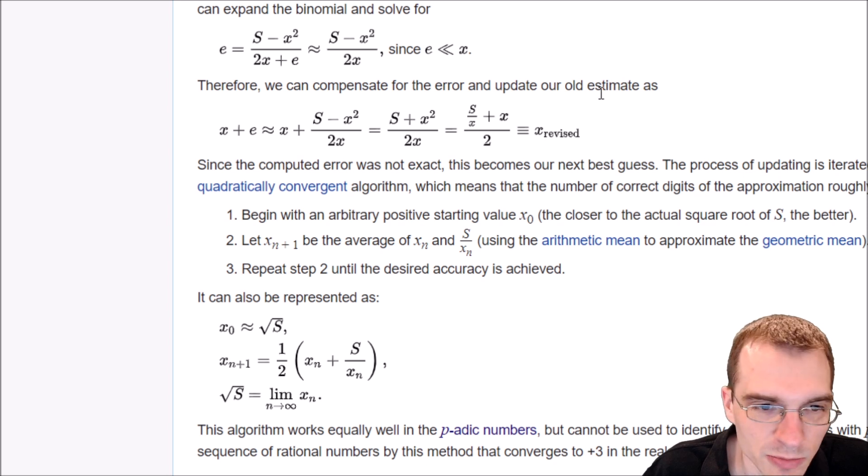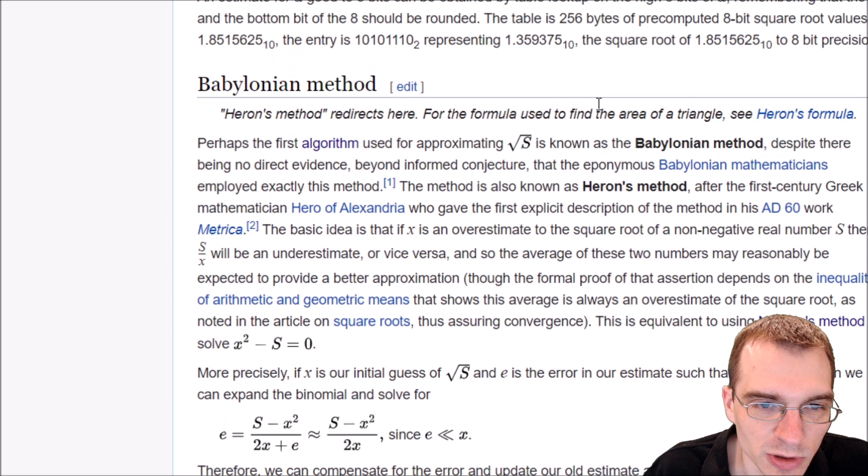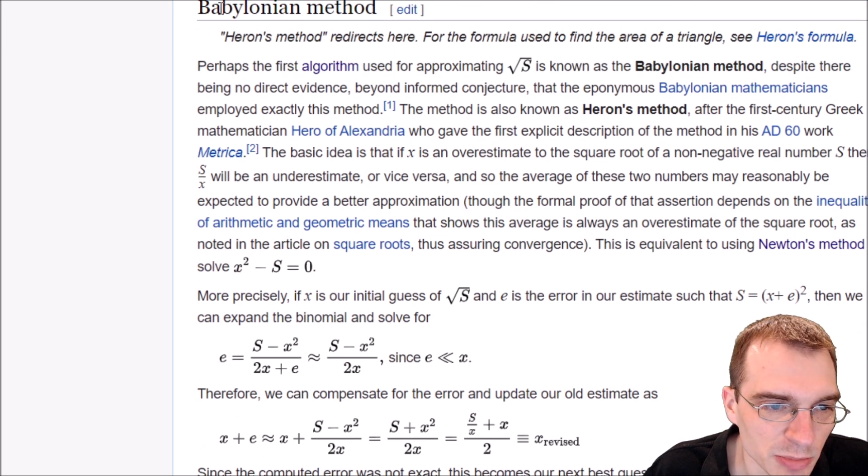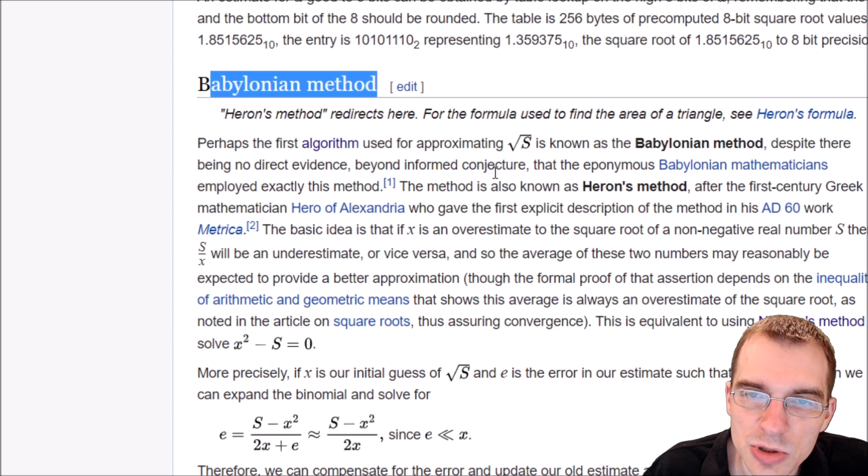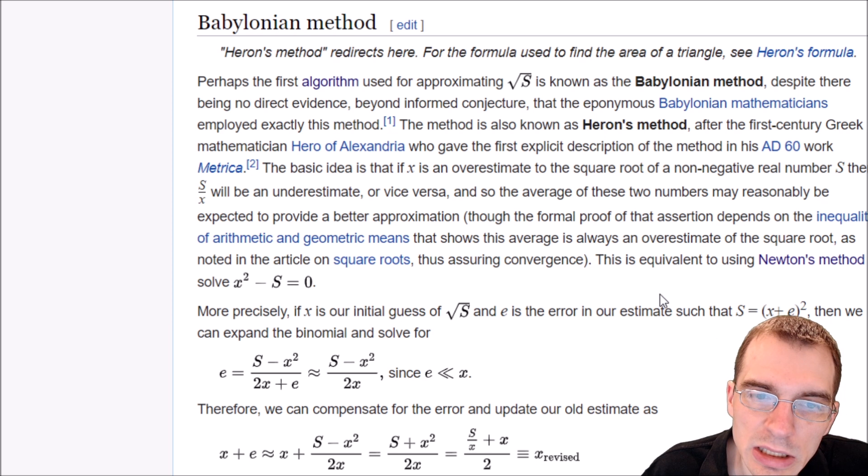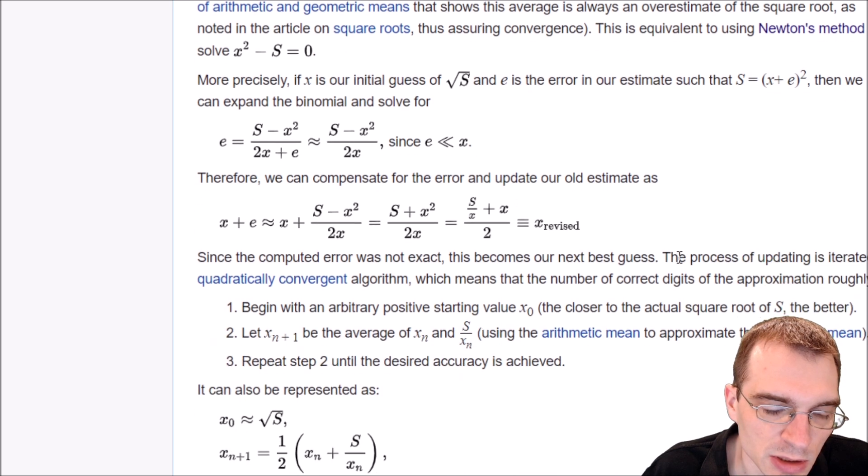So we can look at Wikipedia here. And there's a whole bunch of different methods for finding square roots. I found this thing called the Babylonian method, which is supposed to be one of the first algorithms used for doing this, which is basically an iterative approximation of a square root. Basically, what it does is starts with some estimate of what the square root is, and then iteratively gets closer and closer to the right answer.